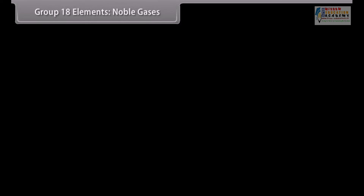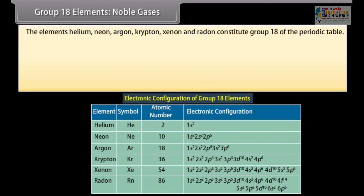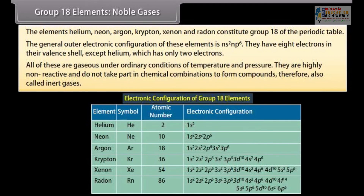The elements helium, neon, argon, krypton, xenon and radon constitute group 18 of the periodic table. The general outer electronic configuration of these elements is NS²NP⁶. They have 8 electrons in their valence shell, except helium which has only 2 electrons. All are gaseous under ordinary conditions of temperature and pressure. They are highly non-reactive and do not take part in chemical combinations to form compounds, and are therefore called inert gases.